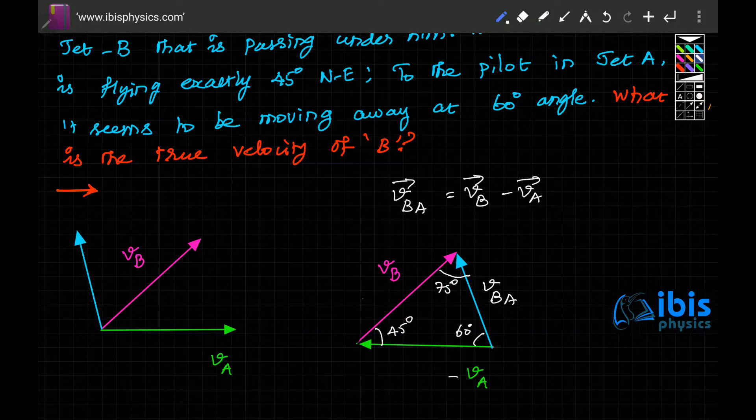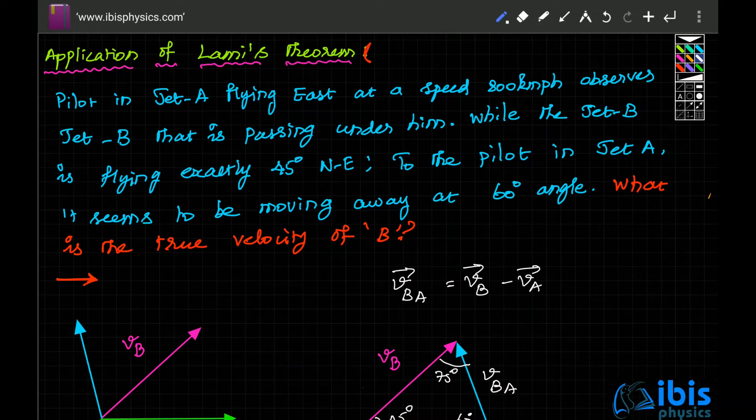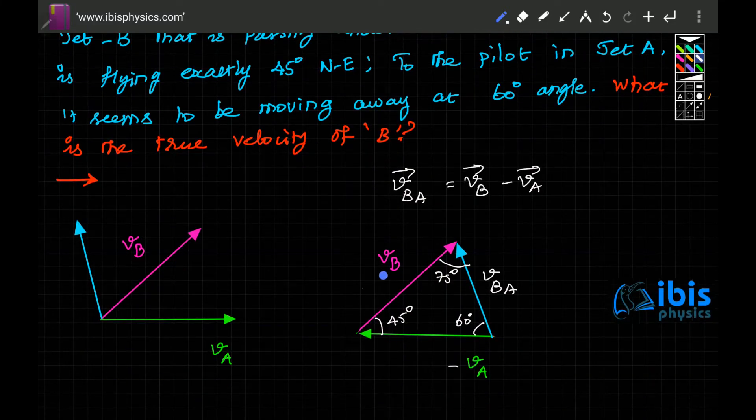Jet A is going towards east. Jet B is actually 45 degrees north of east. And the velocity as observed by A is going away at 60 degrees from it. So now velocity A, velocity B, and velocity VBA all form the sides of a triangle.